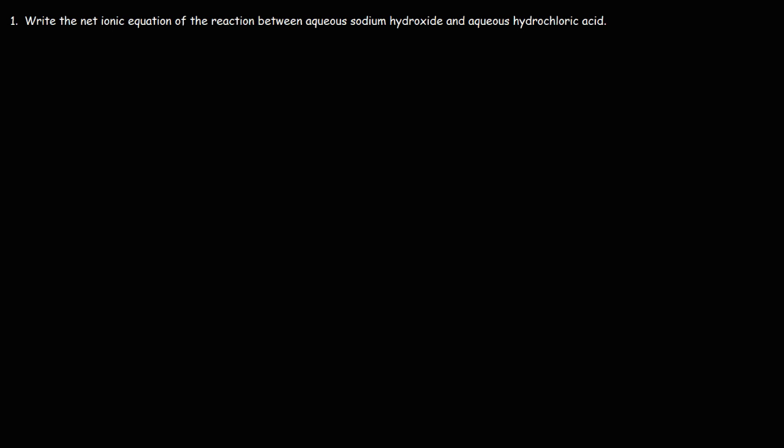The first thing we need to do is write the chemical formulas of these two substances. What is the chemical formula for sodium hydroxide? Sodium is an alkali metal with a plus one charge when it becomes an ion. Hydroxide is a polyatomic ion, which is OH-.